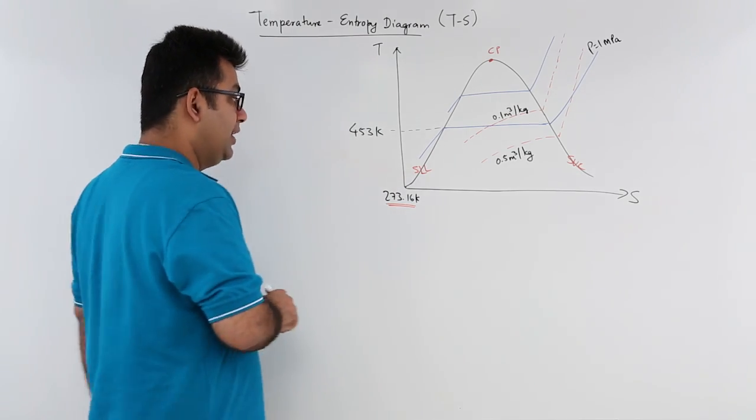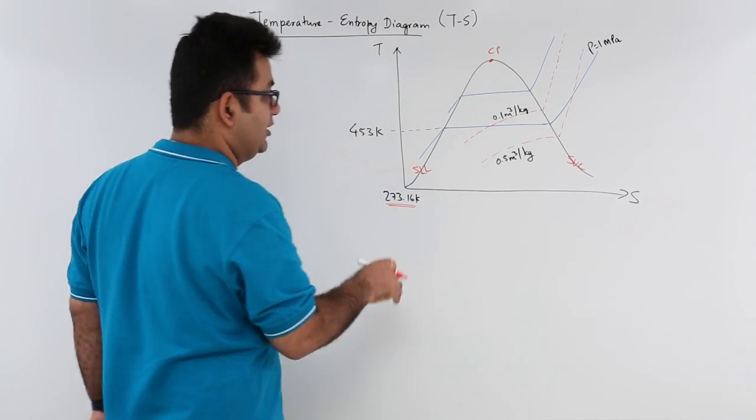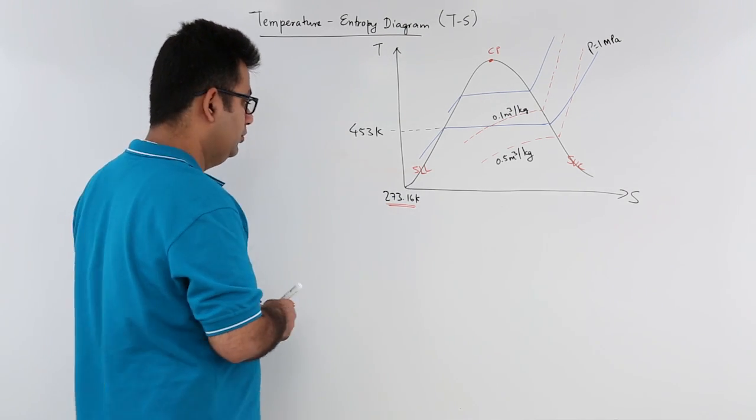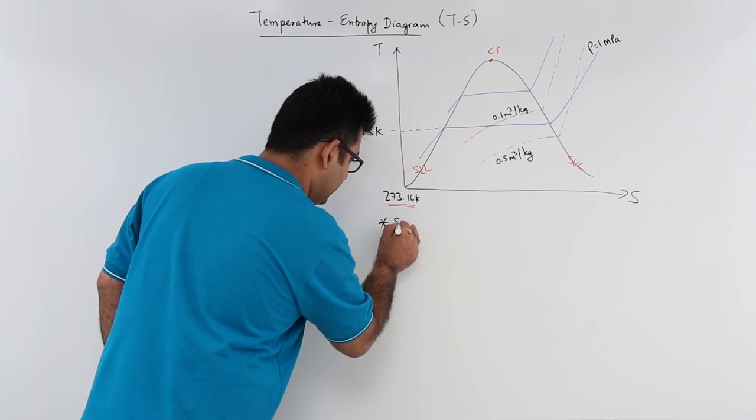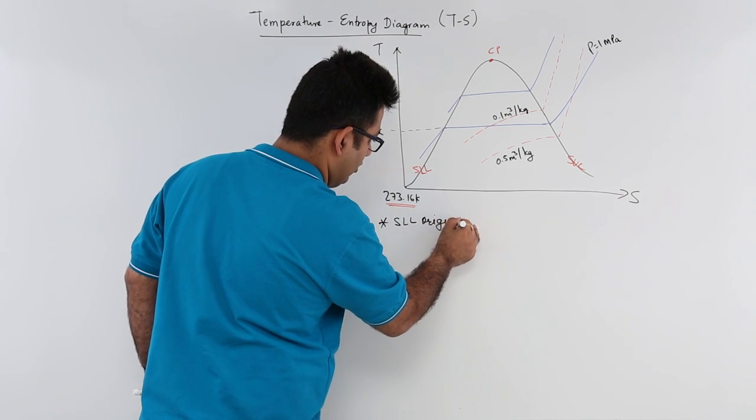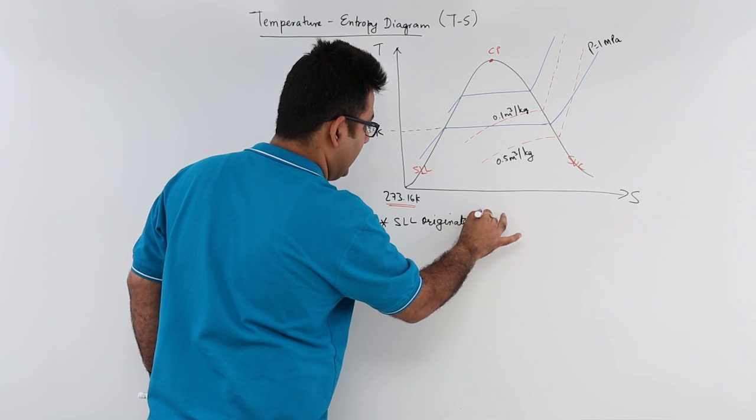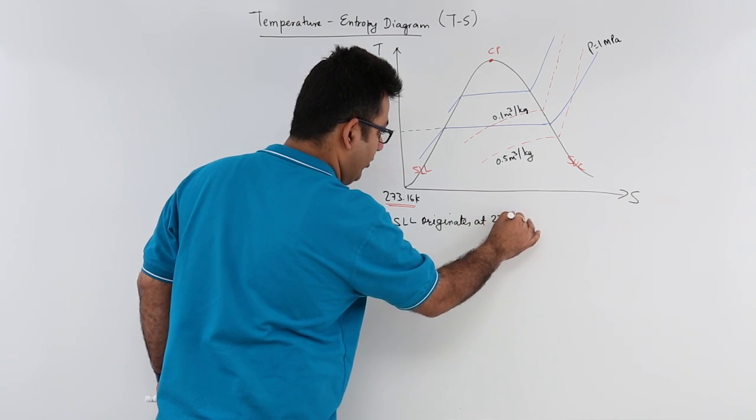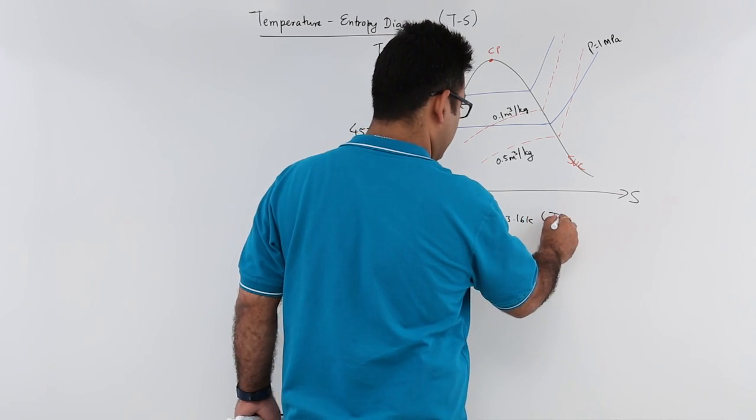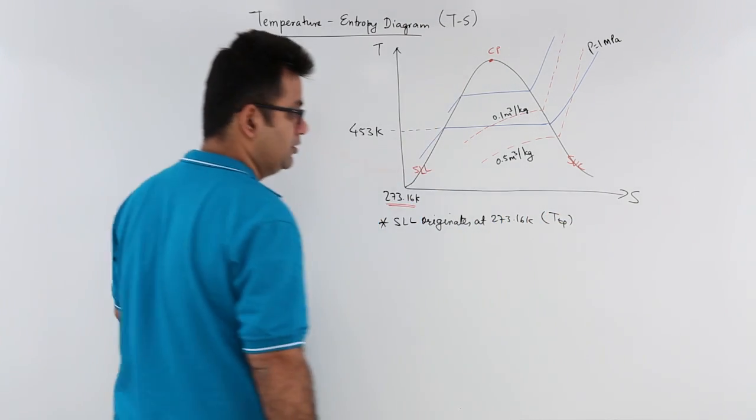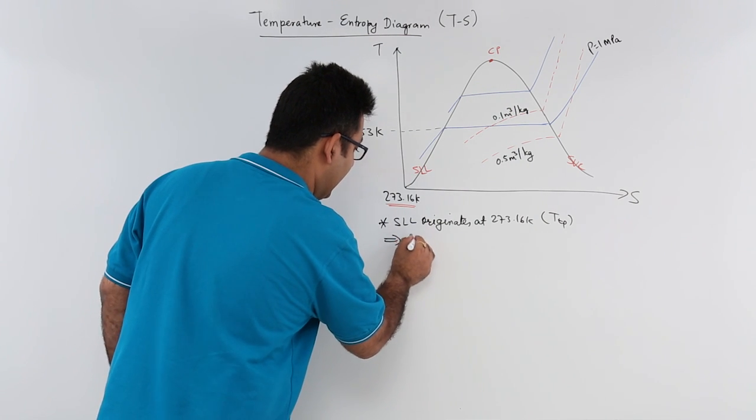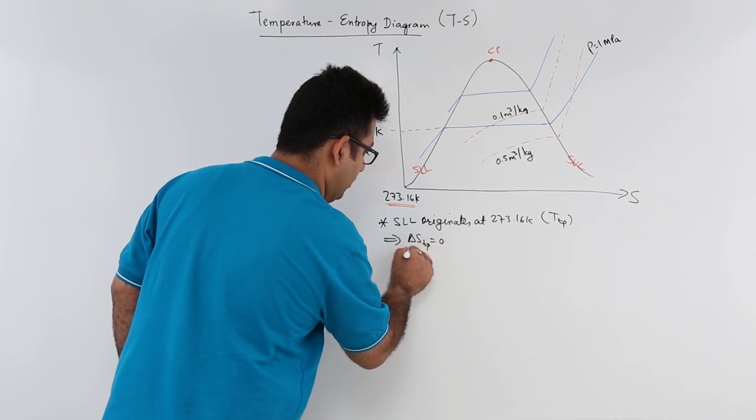So you can say that at triple point the entropy change is zero. This is a point worth noting down. Your saturated liquid line originates at 273.16 kelvin and that is the triple point temperature for water. This means that delta s for triple point is zero.